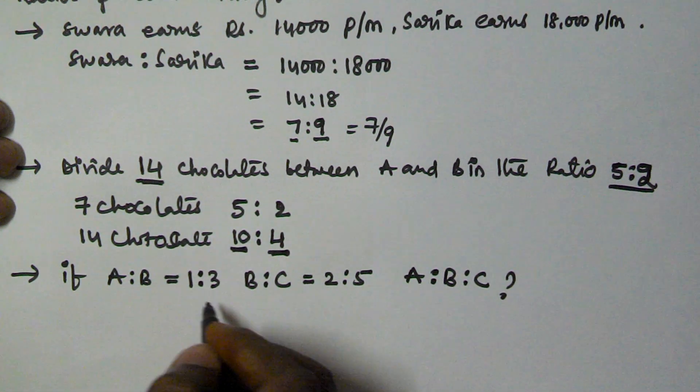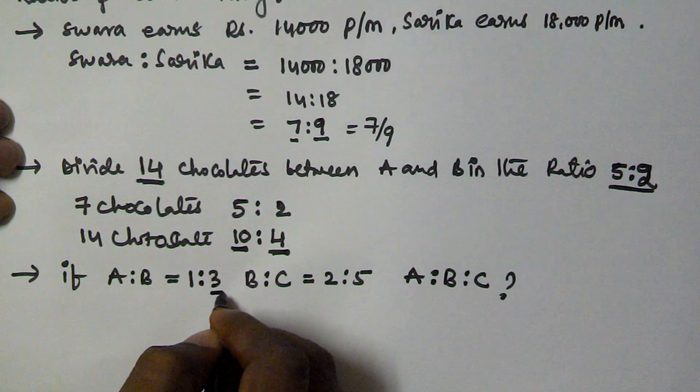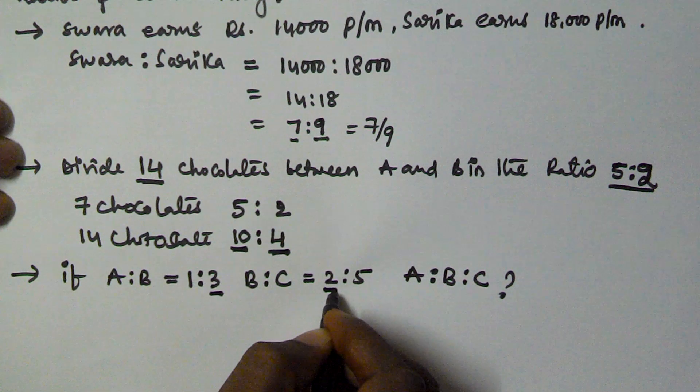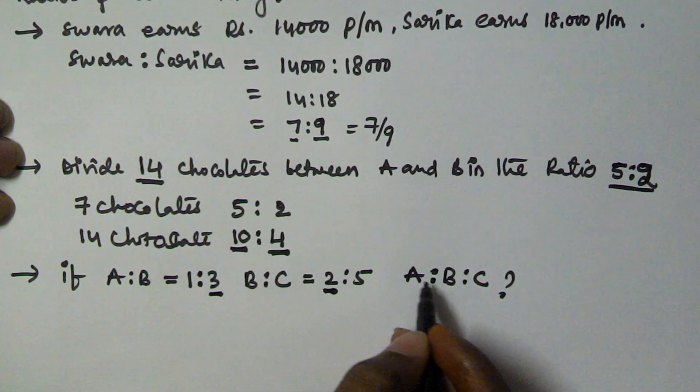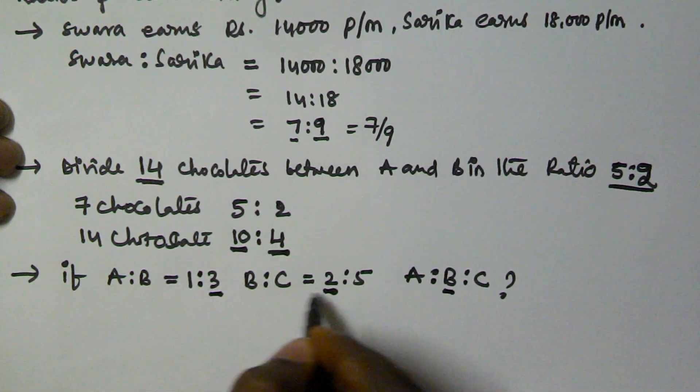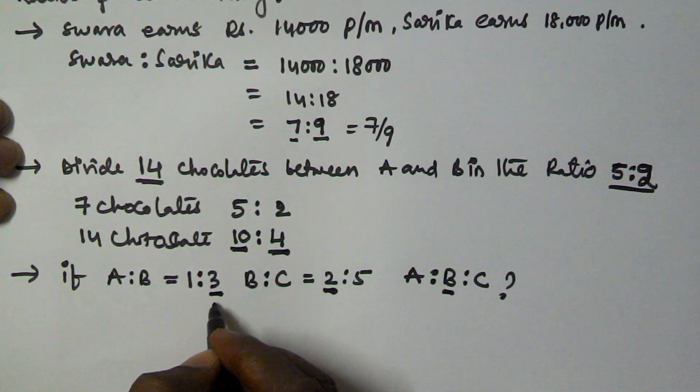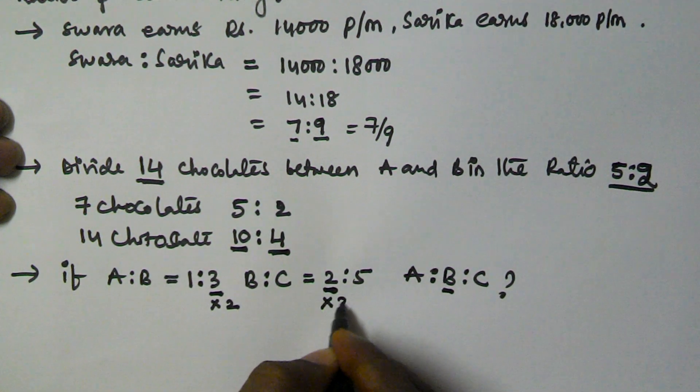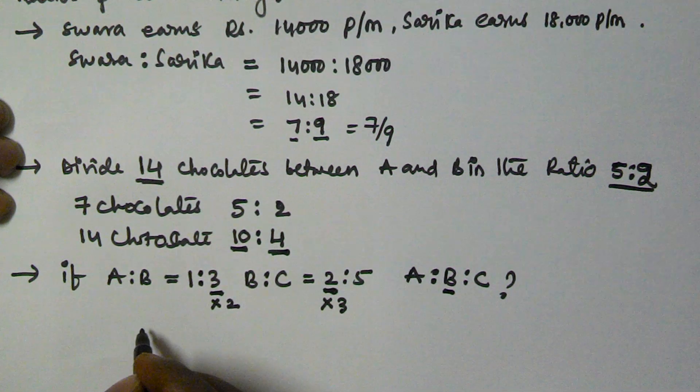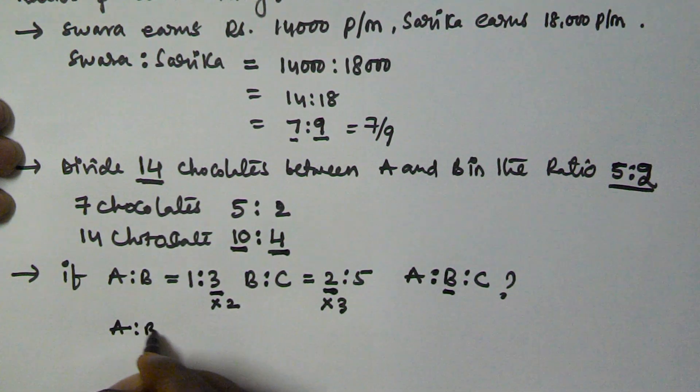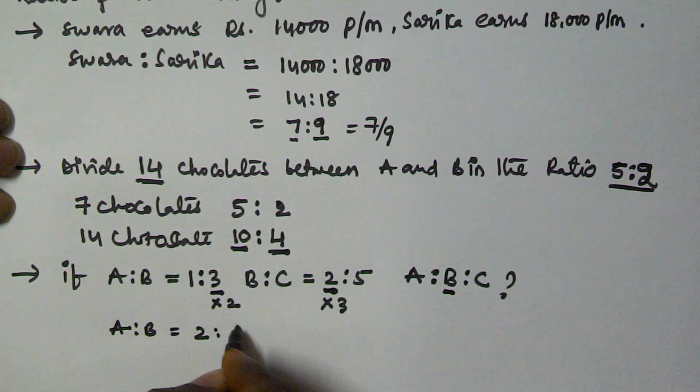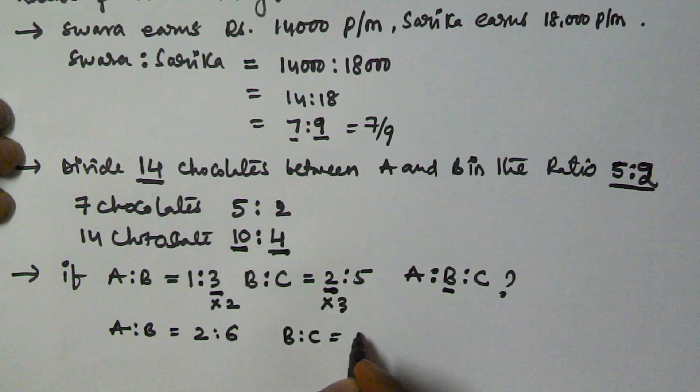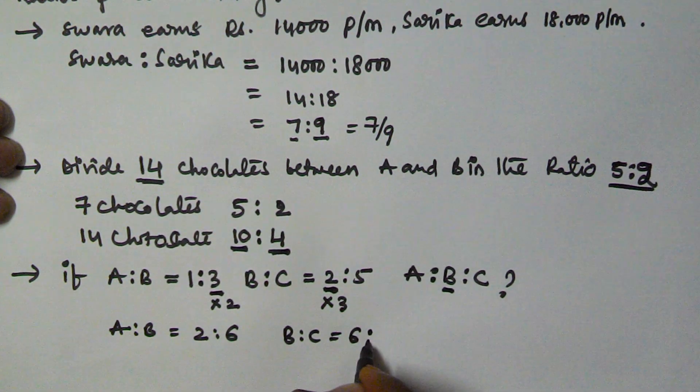According to the given equation, we have here B is 3 and here we have B is equal to 2. So to find A colon B colon C, we have to make the B equal number. To make B equal in both the ratios, we multiply this one by 2 and we multiply this one by 3. So here A colon B is equal to 2 colon 6 and here B colon C is equal to 6 colon 15.